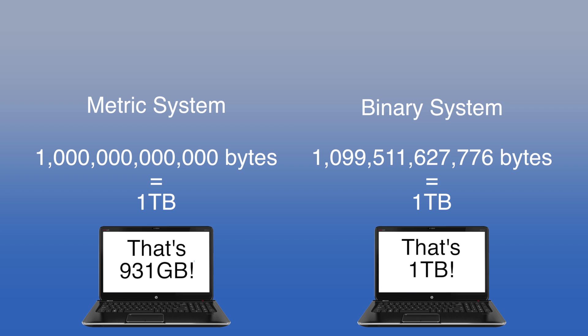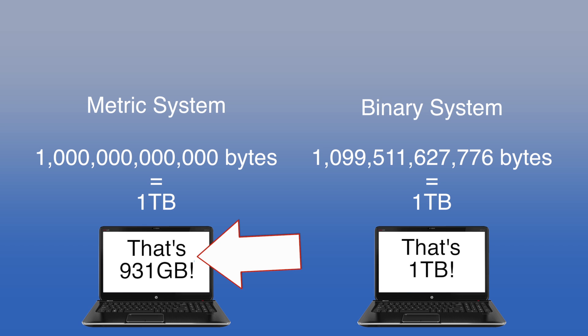So when you're a hard drive manufacturer with a one trillion byte drive, which system are you going to use, binary or metric? Well, you're going to use the one that makes your drive sound better, of course. You're going to use metric. Your computer, unfortunately, doesn't read in metric, so it sees 931 gigabytes, which is what 1 trillion bytes really is.